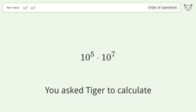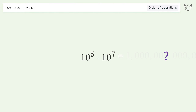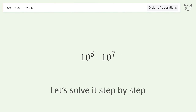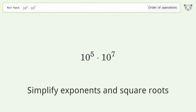You asked Tiger to calculate. This deals with the order of operations. The final result is one trillion. Let's solve it step by step.